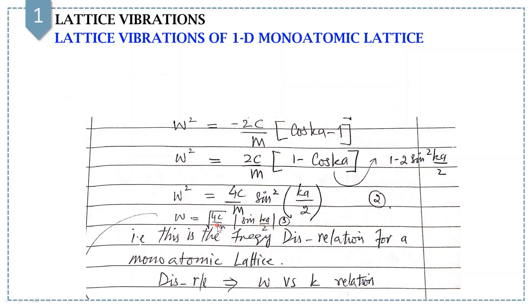Equation number 3 is the frequency dispersion relation for the monatomic lattice. It is the relation between omega and K.